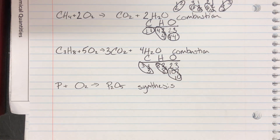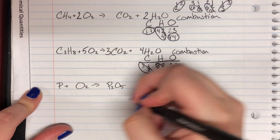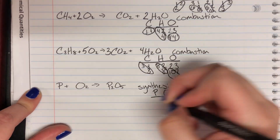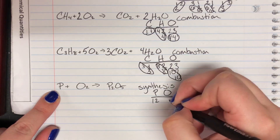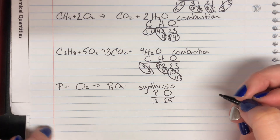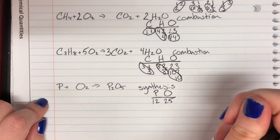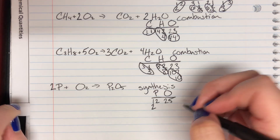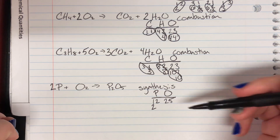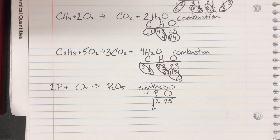The last problem is phosphorus plus oxygen giving diphosphorus pentoxide. My elements are phosphorus and oxygen. Left-hand side for phosphorus: one; right-hand side: two. Oxygen: two on the left and five on the right. Using MINHO, I deal with phosphorus before oxygen. I multiply by two to get two phosphoruses. But then I'm left with oxygen: two on the left and five on the right — that's an even-odd mismatch. I cannot multiply two by any whole number to get five.